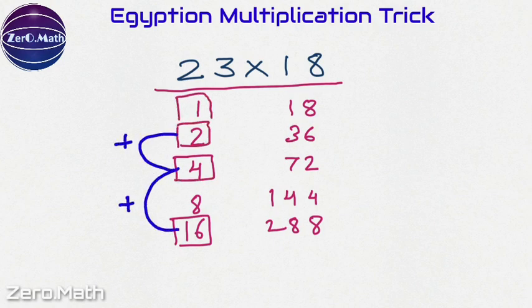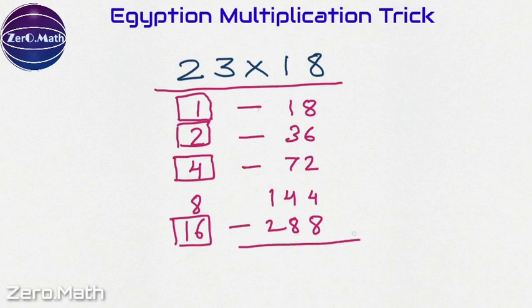Now what we are going to do is take the sum of the numbers which are in front of the square box, and that's precisely going to be our answer. So we are having 18, 36, 72, and 288 in front of the square box. We will not consider 144 here.